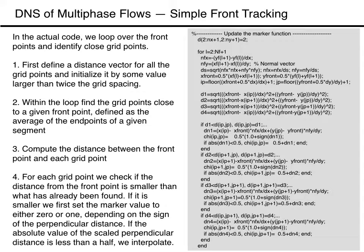First we set the scaled distance from the front equal to a large value for all points of the fixed grid — this is simply an initial guess that will be updated. In the second step we find the normal vector and the midpoints of the front element. Then we compute the distance to the four grid points surrounding the front point. For each grid point we check if the distance from the front point is smaller than what has already been found. If it is smaller, we set the marker value to either 0 or 1 depending on the sign of the perpendicular distance, and if the absolute value of the scaled perpendicular distance is less than a half, we interpolate.